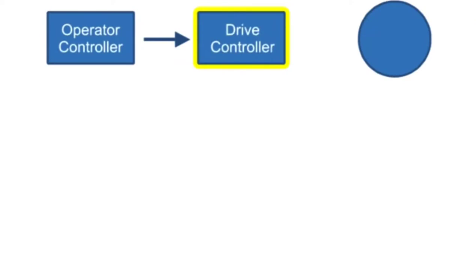A DC drive circuit is composed of three main components: an operator controller, a drive controller, and a DC motor.